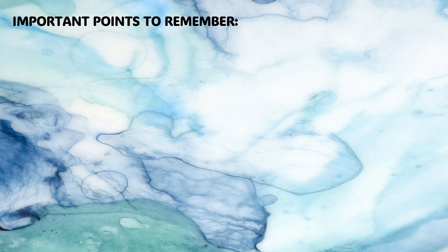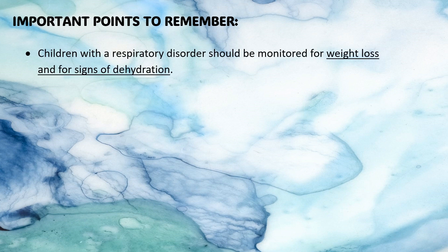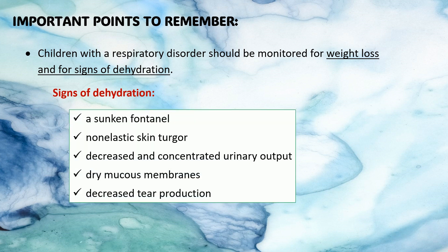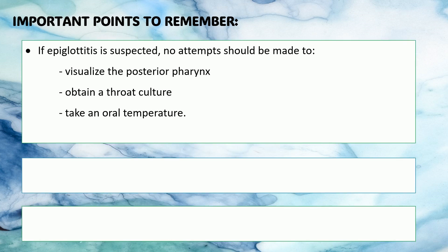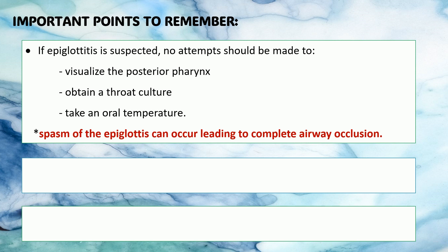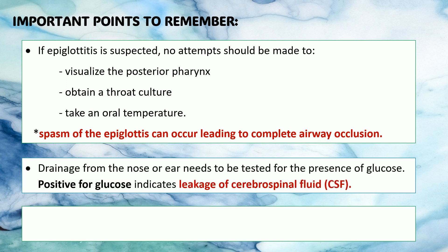Here are the important points to remember. Children with a respiratory disorder should be monitored for weight loss and signs of dehydration, including a sunken fontanel, non-elastic skin turgor, decreased and concentrated urinary output, dry mucous membranes, and decreased tear production. If epiglottitis is suspected, no attempt should be made to visualize the posterior pharynx, obtain a throat culture, or take an oral temperature — otherwise, a spasm of the epiglottis can occur leading to complete airway occlusion. Drainage from the nose or ear needs to be tested for the presence of glucose; drainage positive for glucose indicates leakage of CSF.